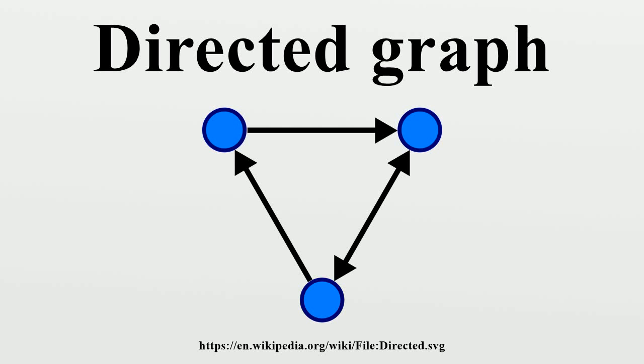In mathematics, and more specifically in graph theory, a directed graph is a graph or set of vertices connected by edges, where the edges have a direction associated with them.